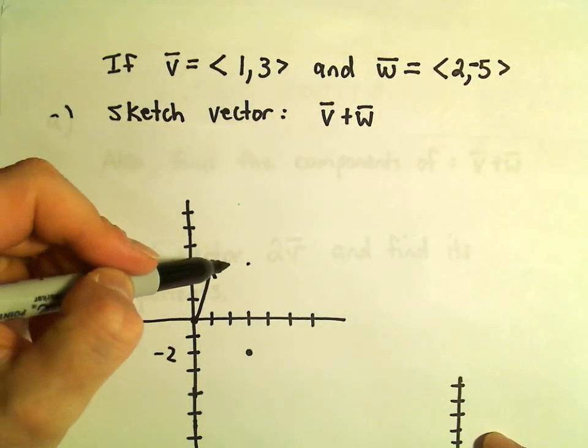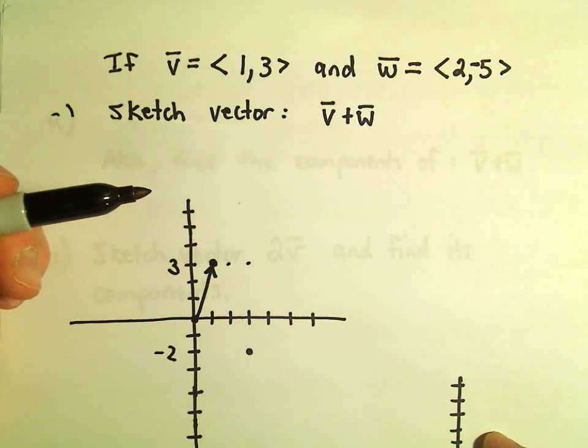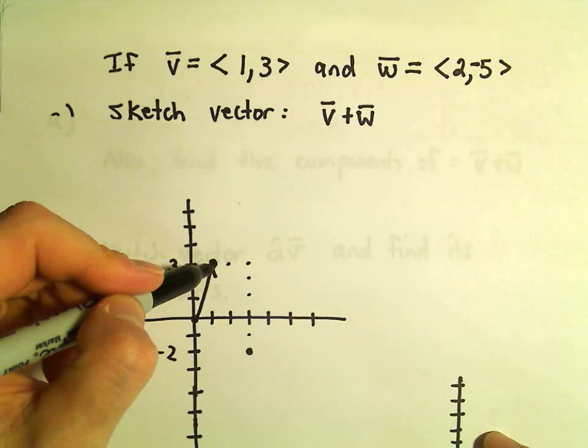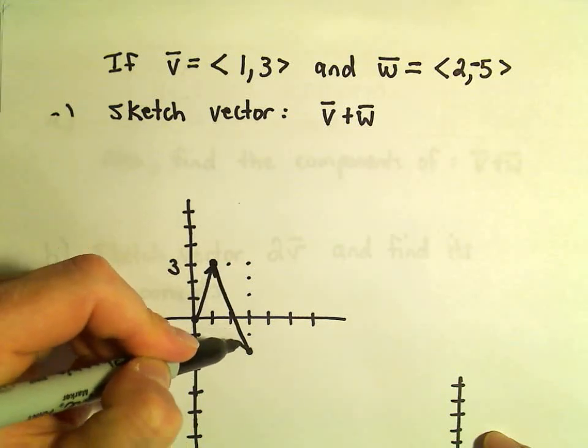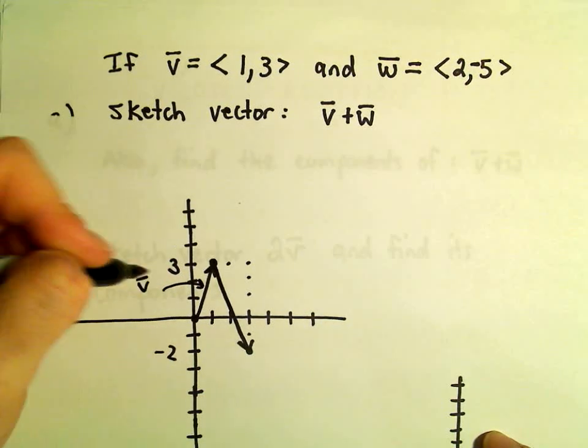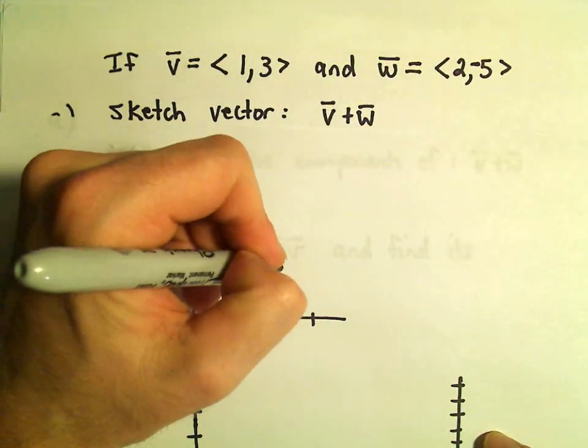If we go down 5 units, we'll be down here at negative 2. So if we go 2 units to the right and then 5 units down, so 1, 2, 3, 4, 5. This would be my vector w. So again, there was vector v, there was vector w.